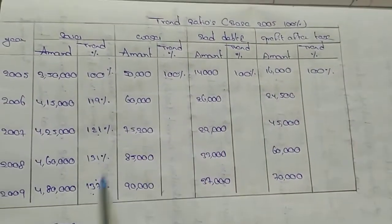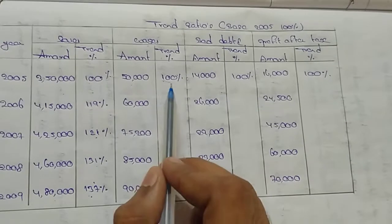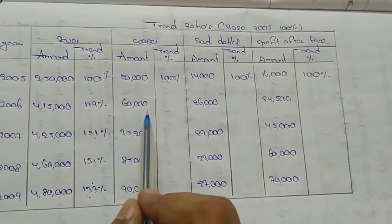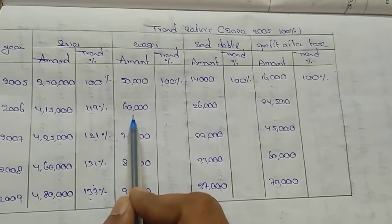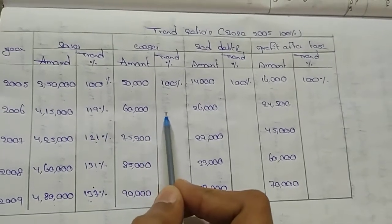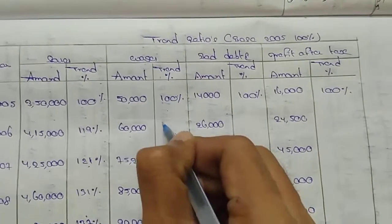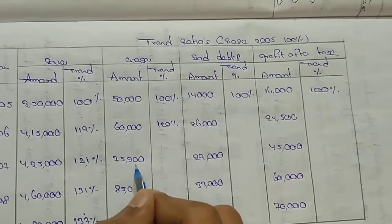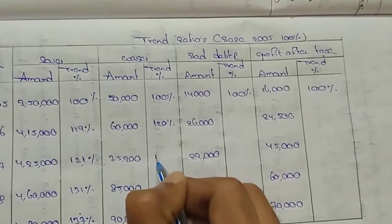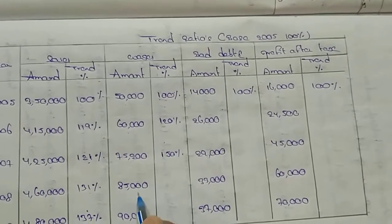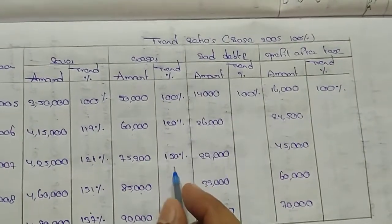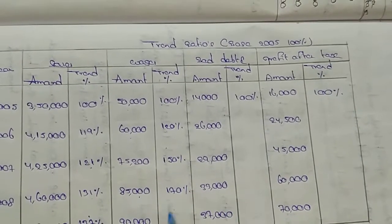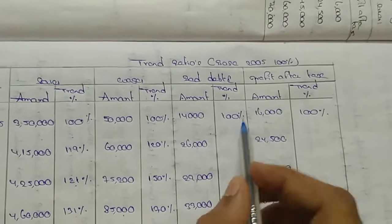For wages trend ratio: 50,000 divided by 100 gives 500 — this is the 1% value. Then 60,000 divided by 500 gives 120%. Next, 75,200 divided by 500 gives 150%. Then 85,000 divided by 500 gives the next percentage, and 95,000 divided by 500 gives 180%.